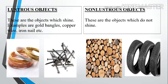Now, lustrous objects and non-lustrous objects. Lustrous objects are the objects which shine. Examples are gold bangles, copper wire, iron nails, etc. Non-lustrous objects are the objects which do not shine. For example, wood, rubber, tyre, etc.